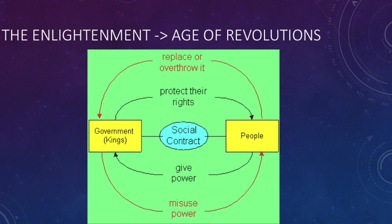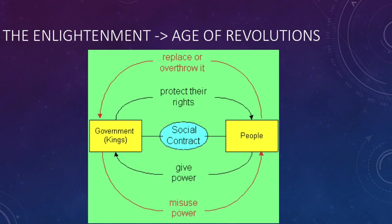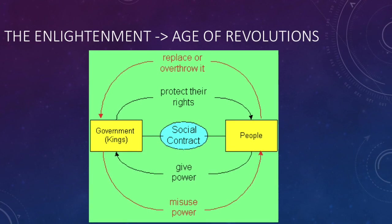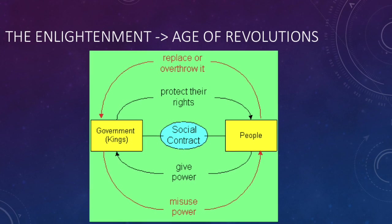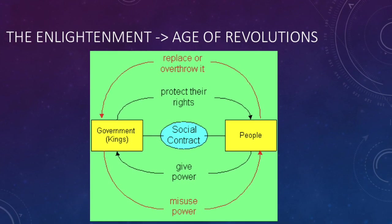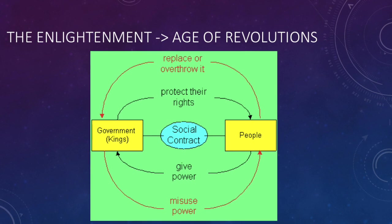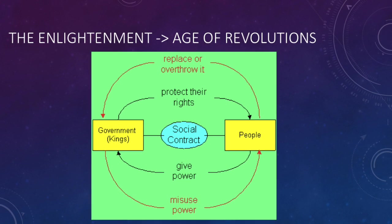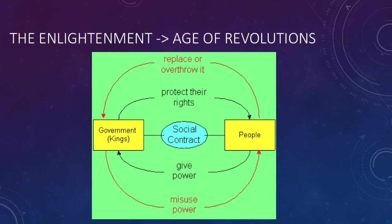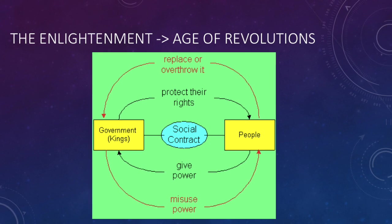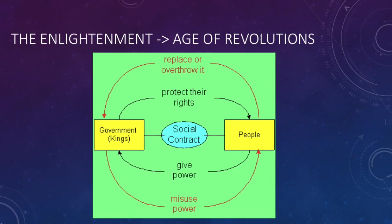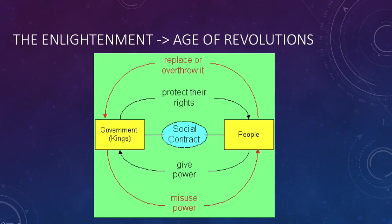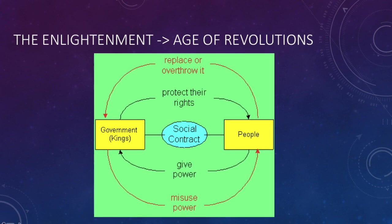This has significance because it implies that the government or king did not get his power from the divine right of God, but instead got it from the people a long time ago. This would imply that if the government ever misused or abused their power, the people have the right to replace or overthrow it. That right to replace or overthrow government is the link between the Enlightenment and the Age of Revolutions.